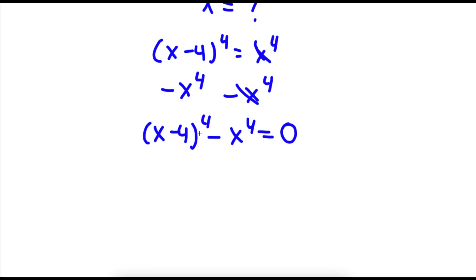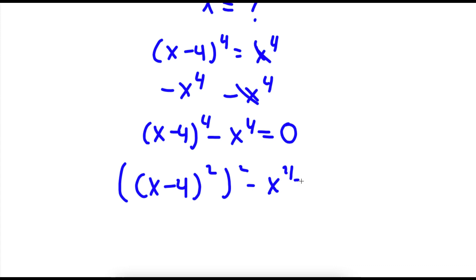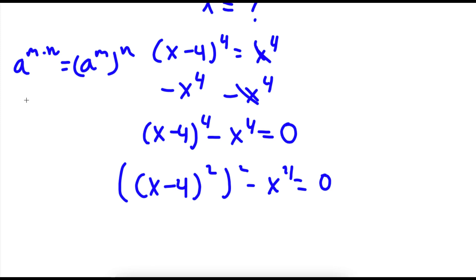Now, x minus 4 to the power of 4 is the same thing as x minus 4 squared, to the power of 2. This is because if I have something in the form a to the power of m times n, this can be written as a to the power of m to the power of n. In this case, 4 is equal to 2 times 2, so I wrote this as a to the power of 2 to the power of 2.